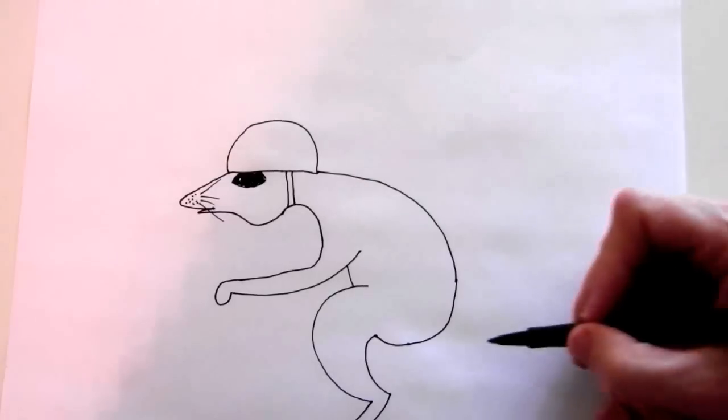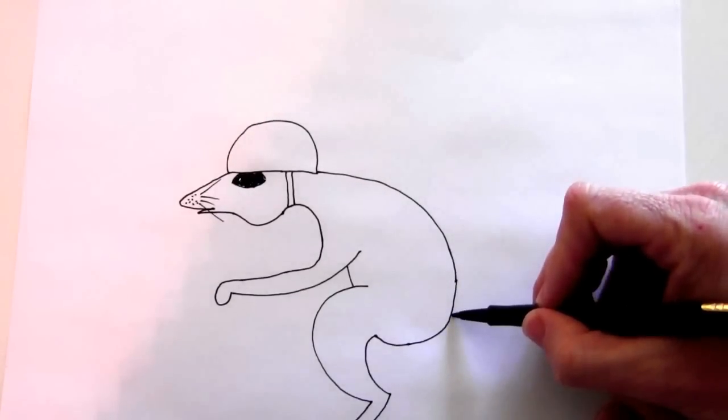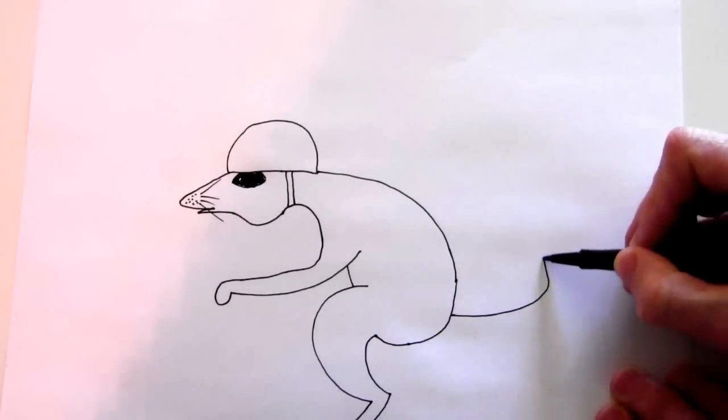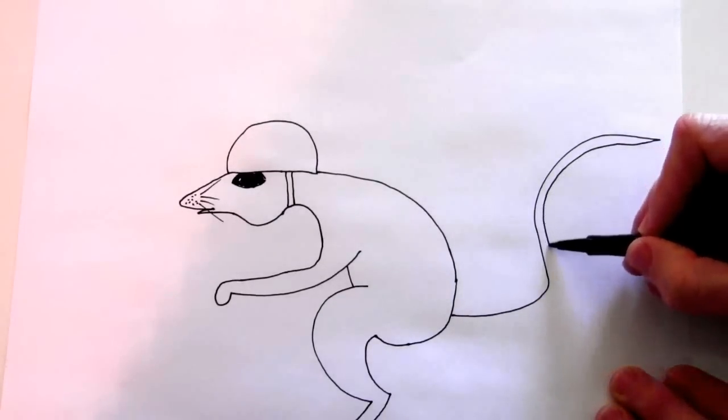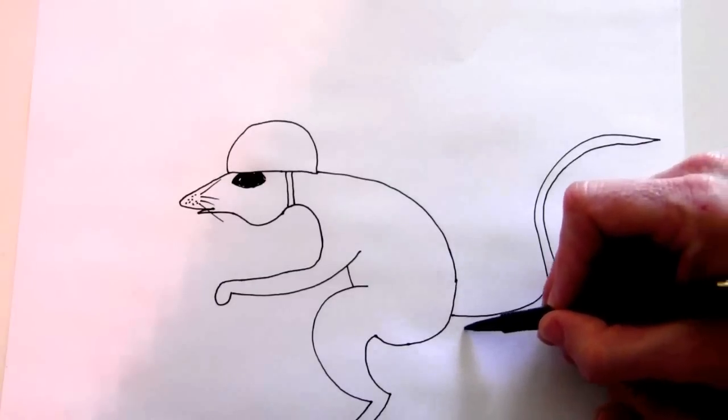Now we're going to draw the tail. It swoops up, it kind of makes a nest shape, and then it comes back down like that.